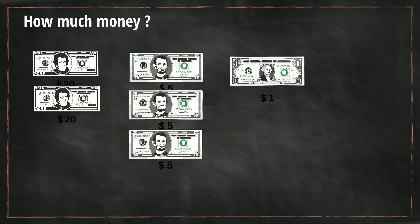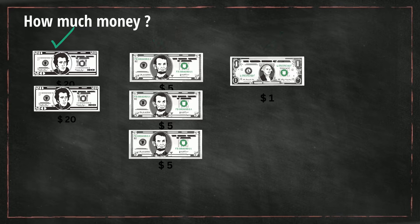So how much money do we have? For this first example, we have two twenties, three five dollar bills, and a one dollar bill. We start with the two twenties: 20 plus 20, which is $40. Then we have three five dollar bills: 5, 10, 15.